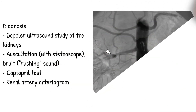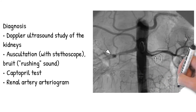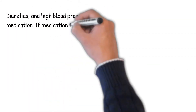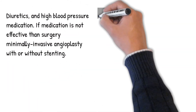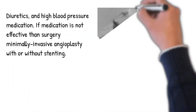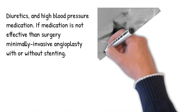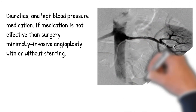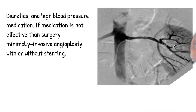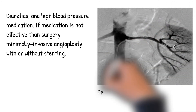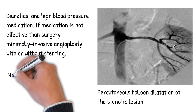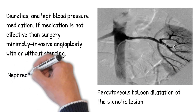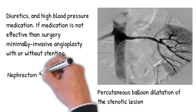Treatment includes diuretics and high blood pressure medication. If medication is not effective, then surgery — minimally invasive angioplasty with or without stenting — may be performed. If all else fails and the kidney is thought to be worsening hypertension, then surgical removal of the affected kidney, nephrectomy, may significantly improve it.